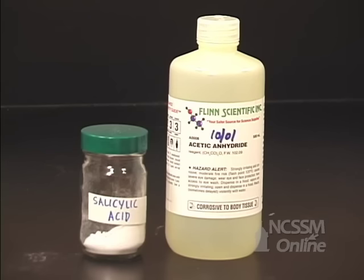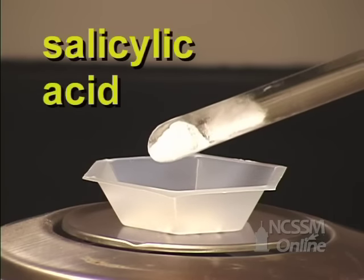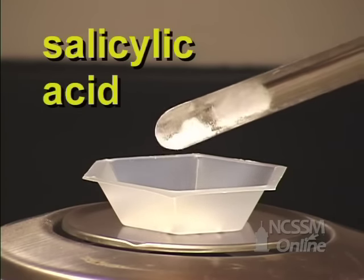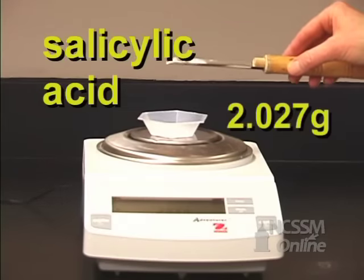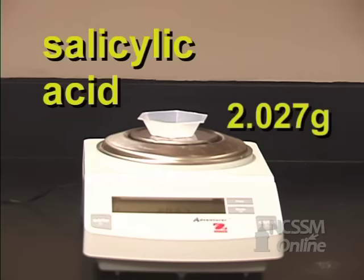And you make aspirin by combining salicylic acid and acetic anhydride. We want to weigh out 2 grams. Actually we have 2.027 grams. So record that number.